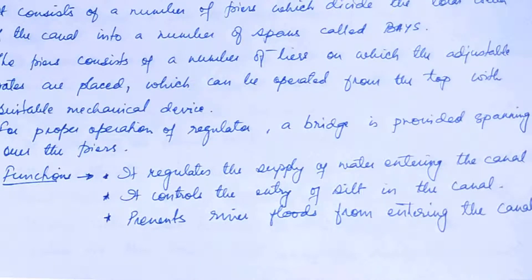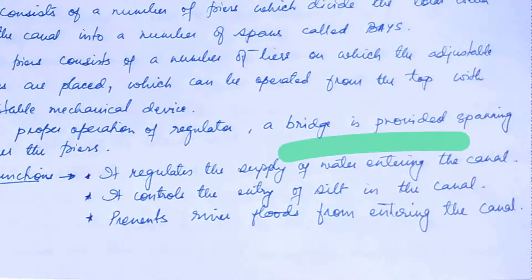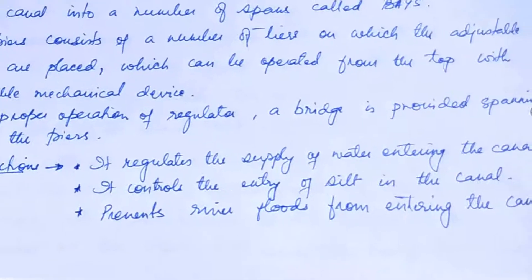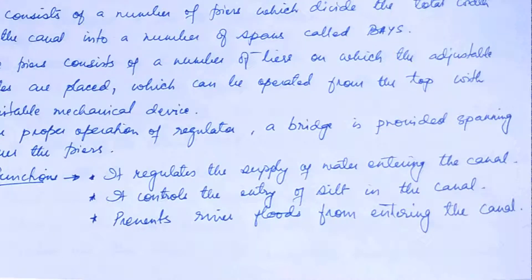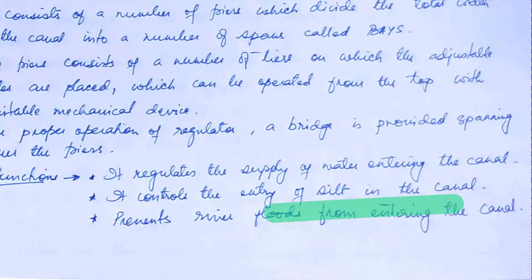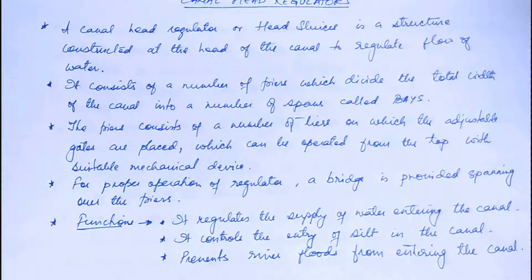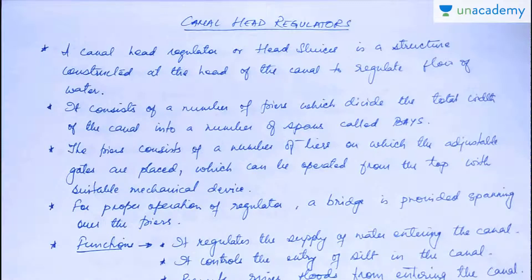For proper operation of the regulator, a bridge is provided spanning over the piers. The functions it basically serves are: it regulates the supply of water entering the canal, it controls the entry of silt in the canal, and it prevents river floods from entering the canal. So these canal head regulators are very important for the safety of your weirs.